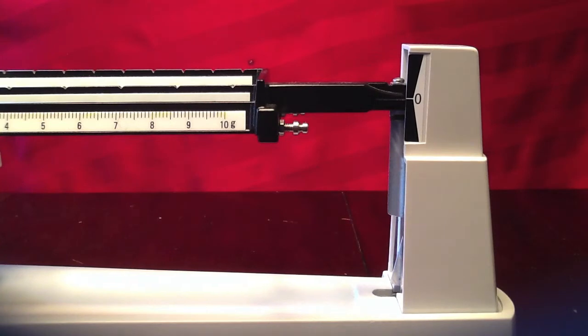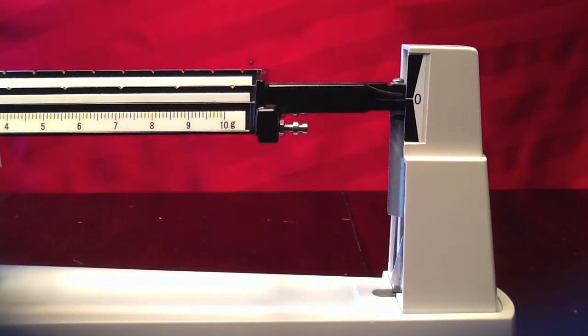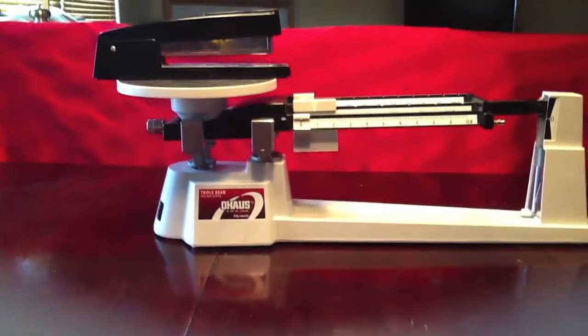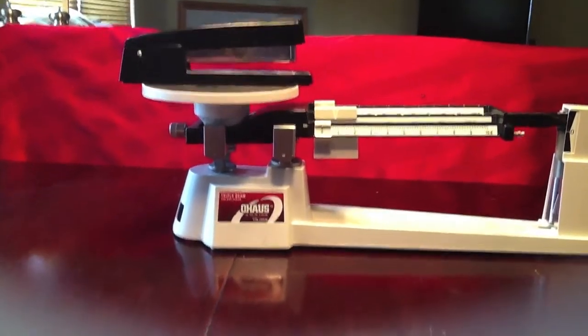Now that we have zeroed our scale, we're going to place our first object onto the pan. Today our first object that we're going to be measuring is a stapler.